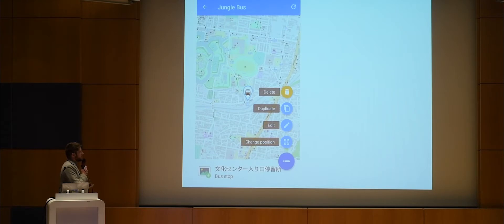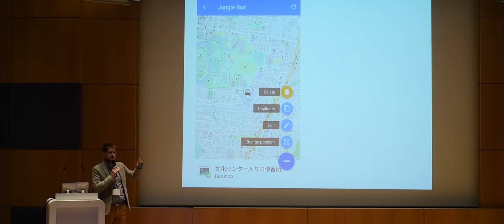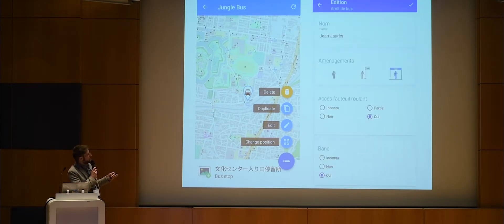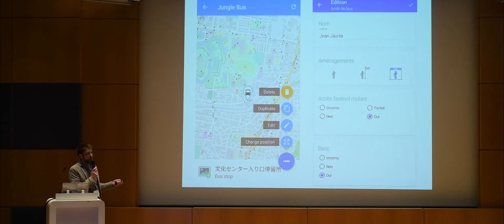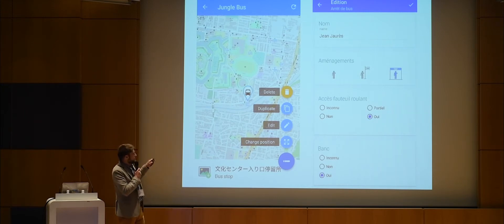We created the Jungle Bus application — a free, open-source Android app. We simplified it as much as possible: it's just a map with bus stops on it, no lines, nothing else. When you select a stop, you can change its position and edit the details — the name of the bus stop, whether there is a shelter, if it's wheelchair accessible, if there's a bench, and so on. There is no limit on the details you can add. Roxanne can go into her city and map every single bus stop.